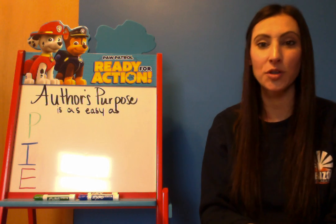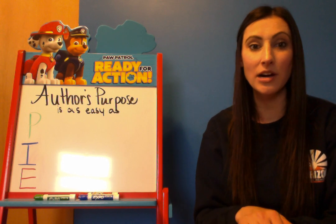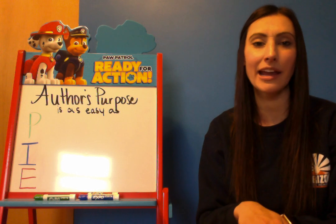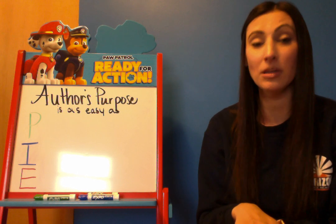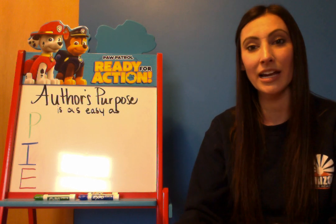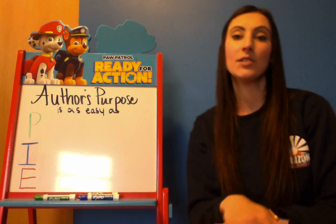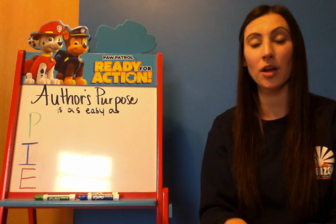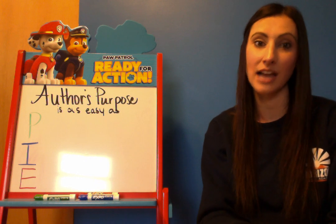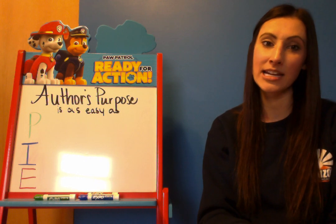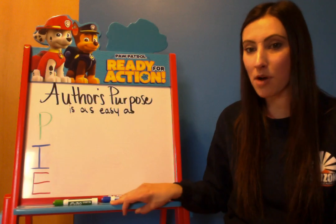Let's get back to PIE — author's purpose. Author's purpose is why an author writes a story, because nobody just decides one day, 'Hey, I'm gonna write a book just to say I wrote a book.' Usually when we write, we have to think about what we're going to write and why. Just like authors, the people who write books are writing for a purpose. There are three reasons — P, I, or E — that nice acronym that spells PIE.